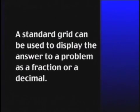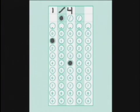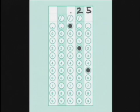As we mentioned earlier, a standard grid can be used to display the answer to a problem as a fraction or a decimal. For example, if the answer to a problem is a fraction, such as one quarter, you can also enter it into the grid as its decimal equivalent of .25. Either answer will be scored as correct.